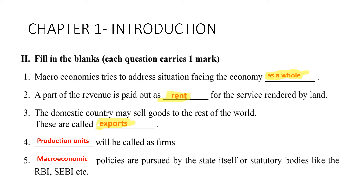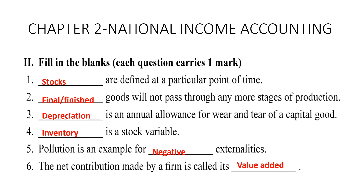Fourth: production units are called firms. Fifth: macroeconomic policies are pursued by the state itself or statutory bodies like the RBI. The answer is macroeconomic policy.